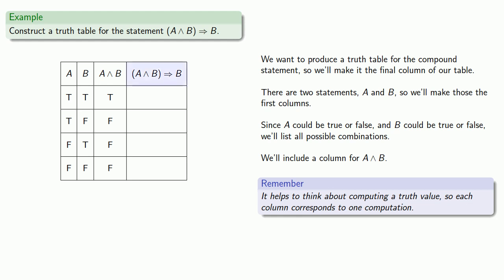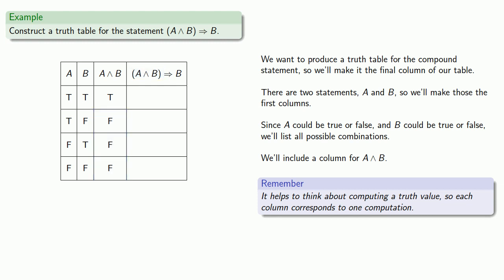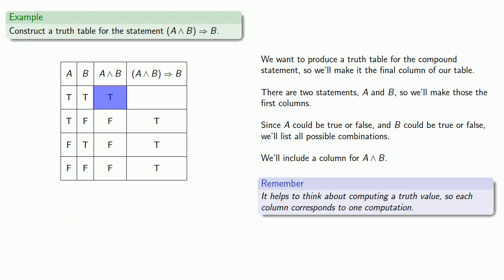For the conditional, the only time it has a possibility of being false is when the antecedent is true. In three of the cases, the antecedent is false, so the conditional is automatically true. In the first case, the antecedent is true, so we check whether the consequent is also true. Since the consequent is b and b is true, the conditional is also true.